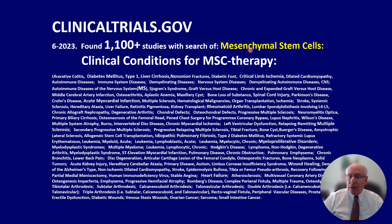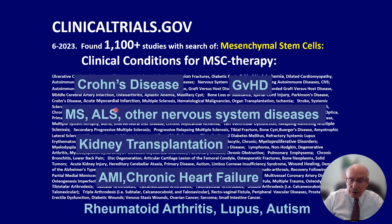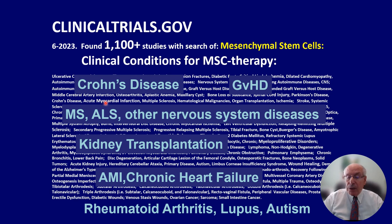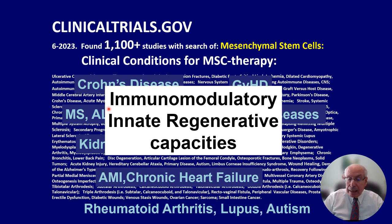If you go to clinicaltrials.gov and enter mesenchymal stem cells into the search engine, you'll get over 1,100 different clinical trials. The clinical conditions include Crohn's disease, graft-versus-host disease, MS, ALS, kidney transplant, acute myocardial infarct, rheumatoid arthritis, lupus, and autism. All of these diseases have two things in common: they need immunomodulation and they need activation of the innate regenerative capacity of that individual tissue.